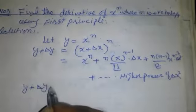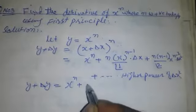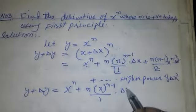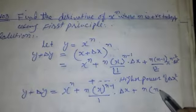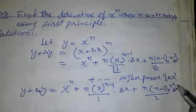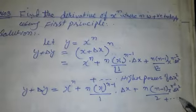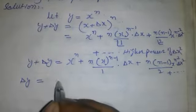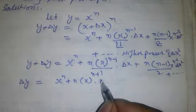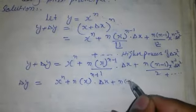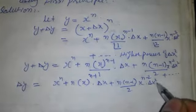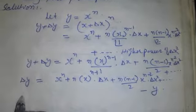So y plus delta y is equal to x to the power n, plus n times x to the power n minus 1 over 1 times delta x, plus n times n minus 1 over 2 times x to the power n minus 2 times delta x squared, and so on. Therefore delta y is equal to this expansion minus y.